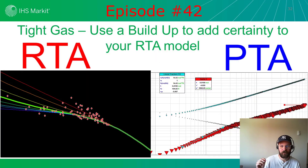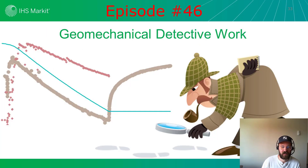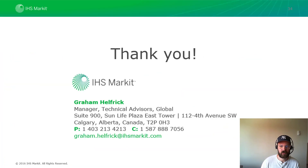Episode 42 covers how to combine RTA and PTA to add certainty to your reservoir characterization and forecast — it's for tight gas but works with many different reservoir types. And episode 46 addresses over-pressured reservoirs, where there can be a geomechanical effect — a productivity loss as drawdown occurs. It shows the value of a build-up test to calibrate and better describe your reservoir and completion. Thank you for your time — any questions, I look forward to working with you.